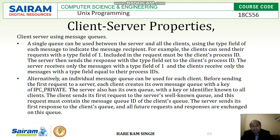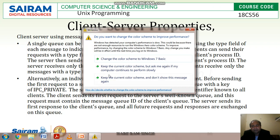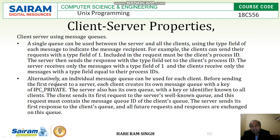Using the message queue, client and server can communicate with each other. Alternatively, an individual message queue can be used for each client. Before sending the first request to a server, each client creates its own message queue with a key of IPC_PRIVATE. Each client can also create a new message queue using IPC_PRIVATE. The server also has its own queue with a key or identifier known to all clients.